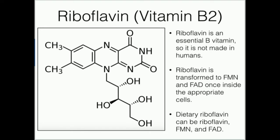Riboflavin is not something that humans can synthesize. Any form or derivative of riboflavin that humans use — which in general are going to be FMN and FAD — those are going to be derived from dietary riboflavin, meaning that riboflavin is going to be an essential nutrient or vitamin. We have to get it through the diet; we cannot make this complicated molecule.